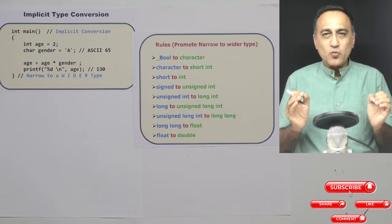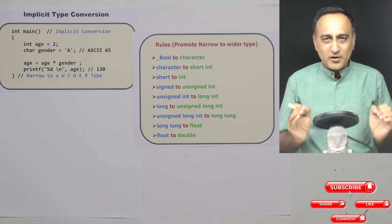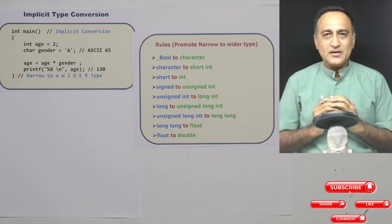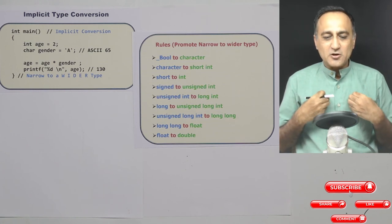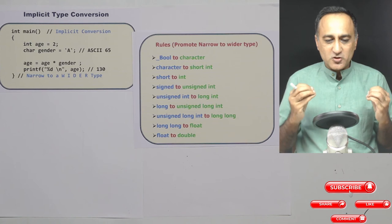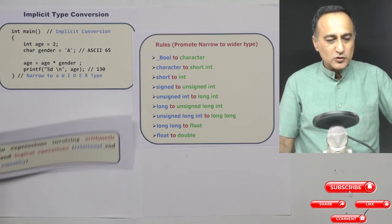This promotion from a narrower data type to a wider data type is done by the C compiler without any intervention or without me giving any instructions to the compiler. So where is this useful?